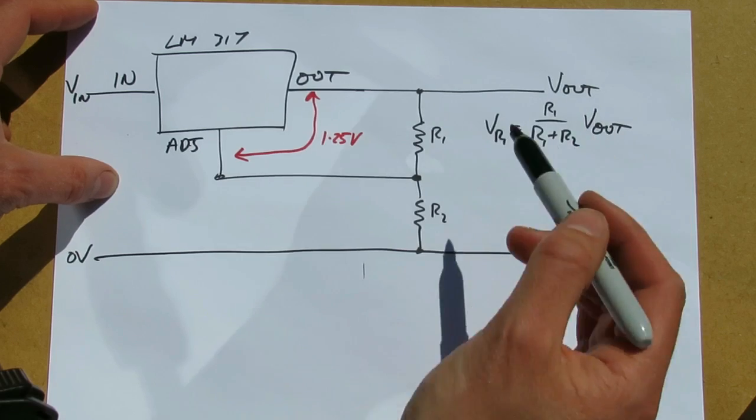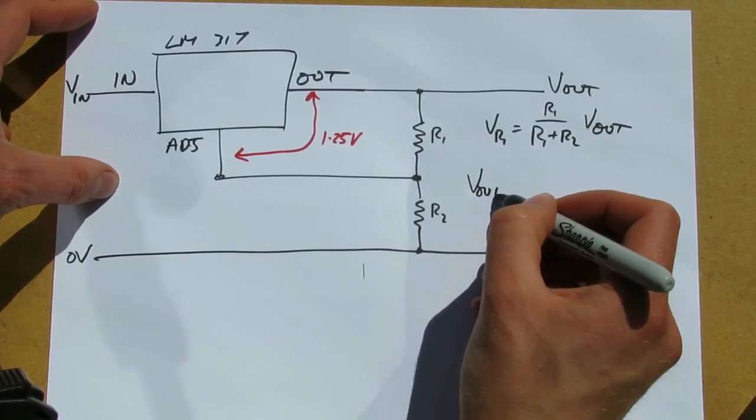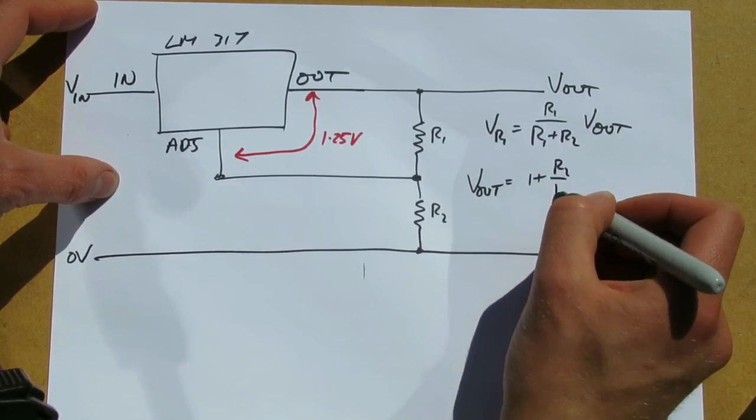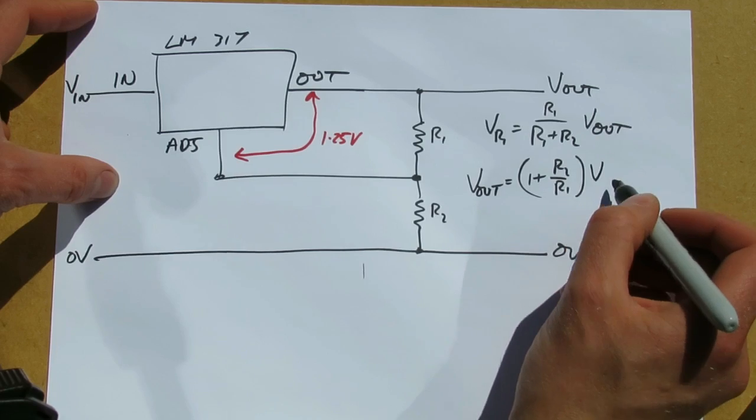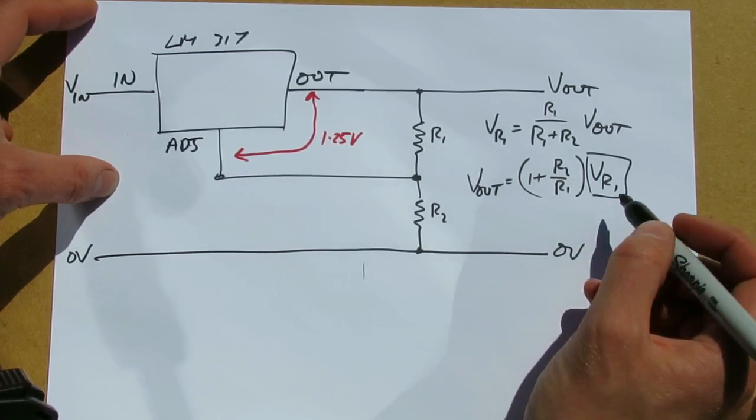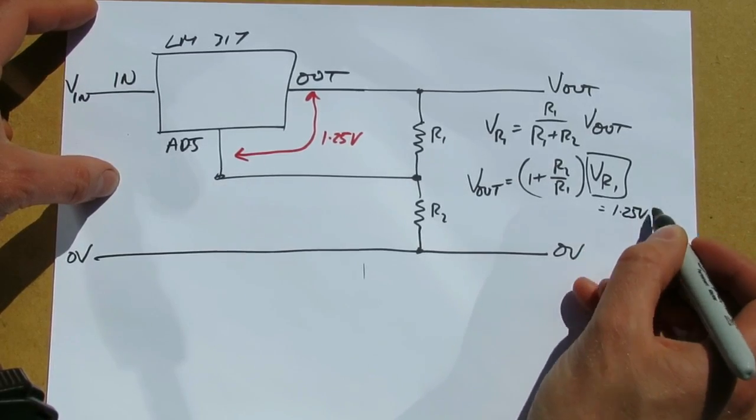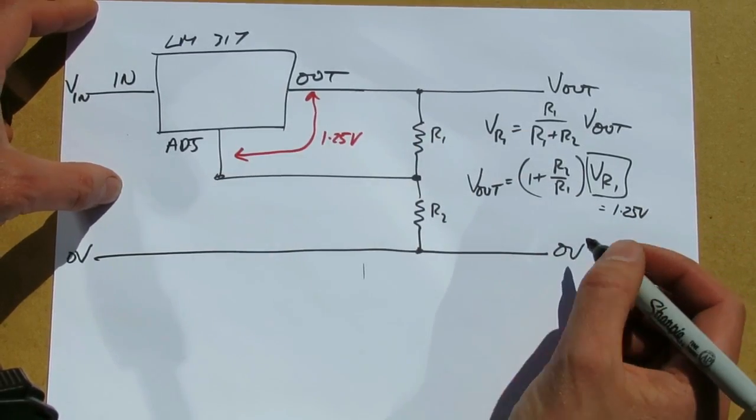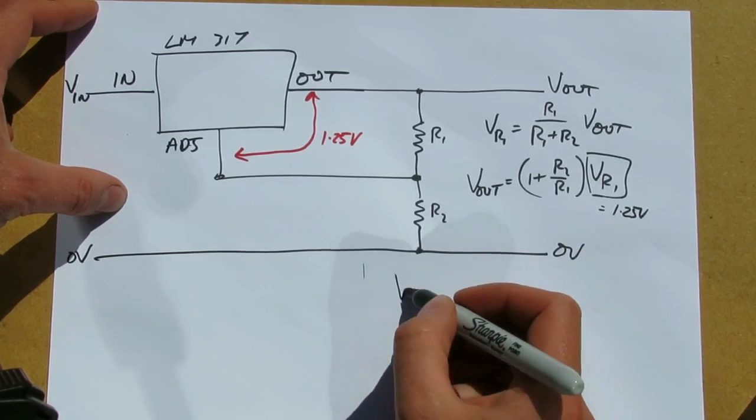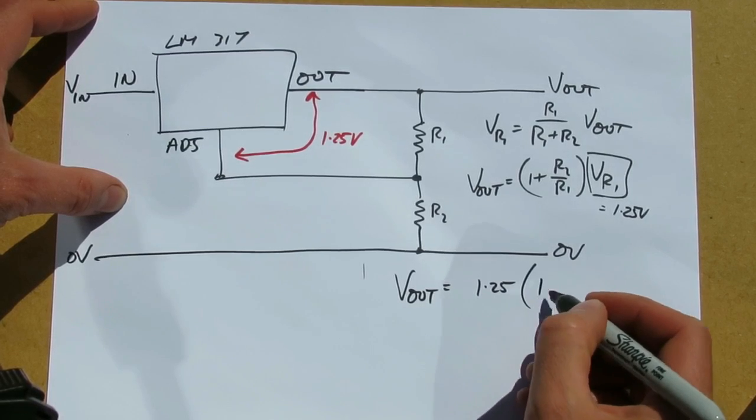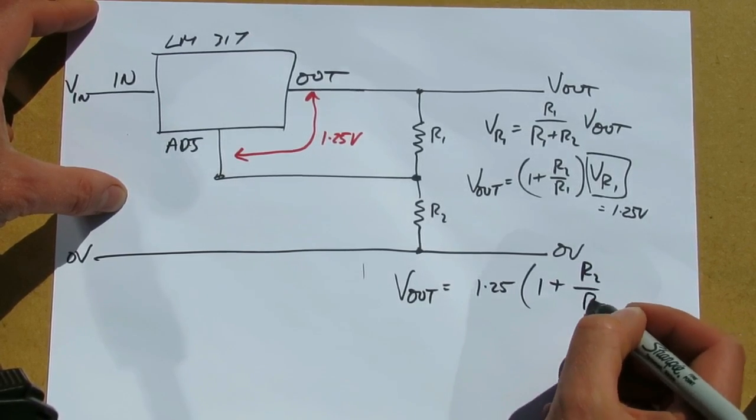Rearranging that, we get Vout is equal to 1 plus R2 over R1 times Vr1. Vr1 is held constant at 1.25 volts by the LM317, so Vout is simply 1.25 volts times R1 plus R2 over R1.